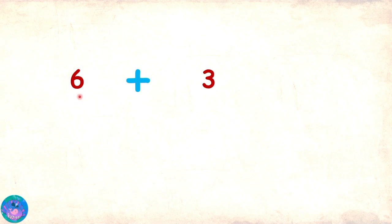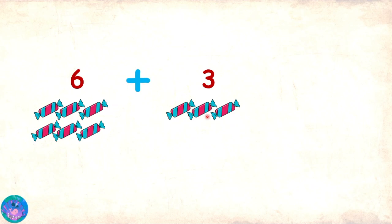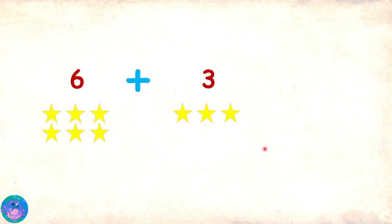Sam, can you read this? Six plus three. But six what? It doesn't say. Yes, if you are given only numbers to add, you can imagine the numbers to be the quantity of any object that you want. So could it be pencils? Of course — six pencils and three pencils. Could it be candies? Why not — six candies plus three candies. How about we use stars? Yes, so six stars plus three stars.